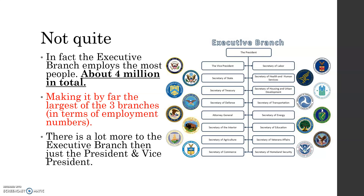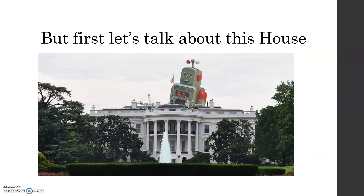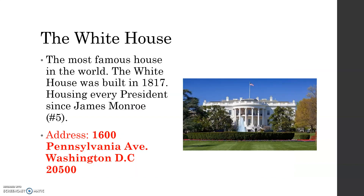You might think the legislative branch is bigger because we vote for a lot more people than the one person in the executive branch, but when it comes to actual job positions, it's the executive branch that is the biggest. Now let's talk about the White House — the most famous house in the world. Built in 1817, it has housed every president since James Monroe. Make sure you know its address: 1600 Pennsylvania Avenue.